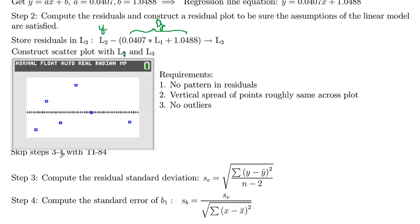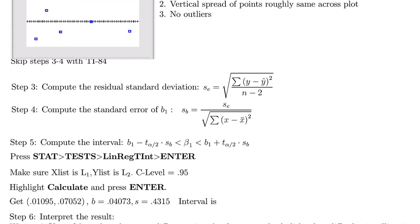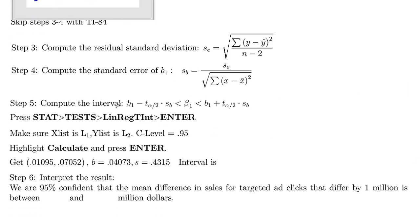Steps three and four with the TI-84, you'll skip those, and those are producing the residual standard deviation and then computing the standard error of the slope coefficient B1. So now we can actually compute the interval here. This is the formula for the interval. Beta1 is the population parameter, and B1 is the slope in our regression line. We're adding and subtracting a margin of error, which is a T value times our standard error of the slope. To do that, we're going to do stat, test, linear regression T interval, and then enter.